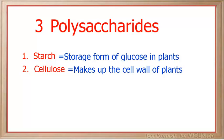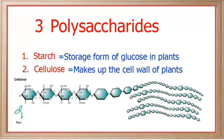Notice the bonds between the monosaccharides are shown as alternating to indicate a unique type of bond. Because we cannot digest cellulose, it goes through our digestive system as fiber.